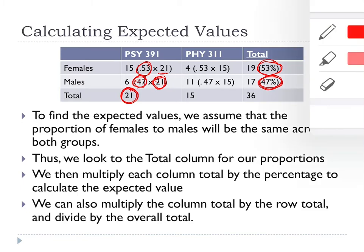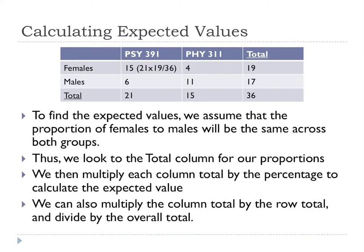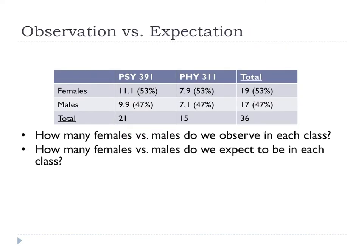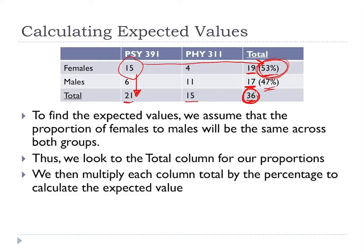Once we multiply those out, we end up with an expected value. I want to show you a second way to do this. The first way was 0.53 times 21, which gives us 11.1. We can also just multiply the column total by the row total and divide by the overall total — and the result is the same.